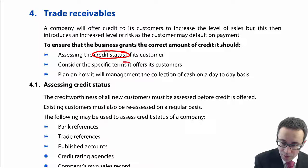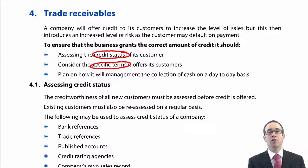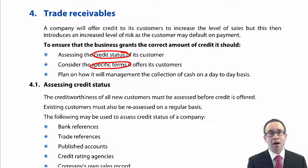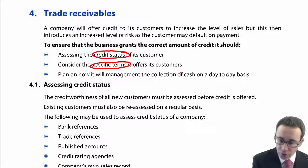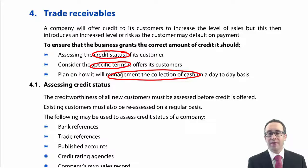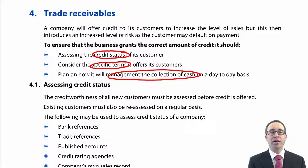We need to look at the specific terms that we offer: how long the credit period is going to be, whether we're going to offer any potential discounts, and what is the maximum amount of credit we are going to grant to that customer to ensure they pay on time. Then, once we've got that sorted, we need to look at the management of the collection of cash. We've made the sale to our customer and decided upon the terms — how do we ensure that we get the cash collected on a regular basis?